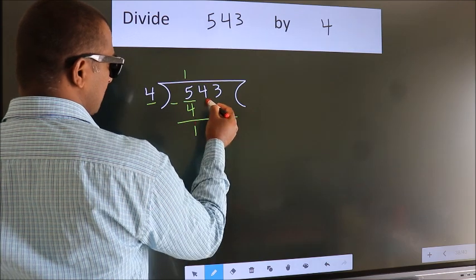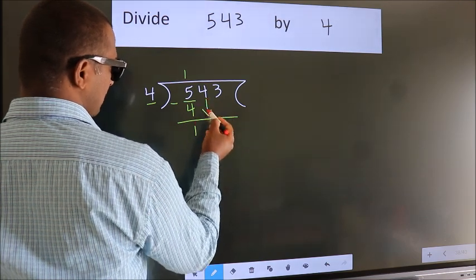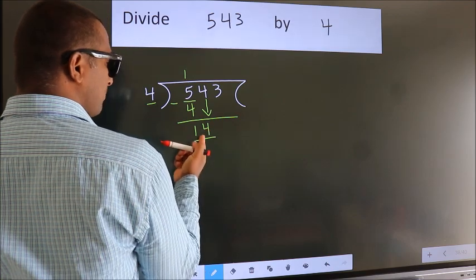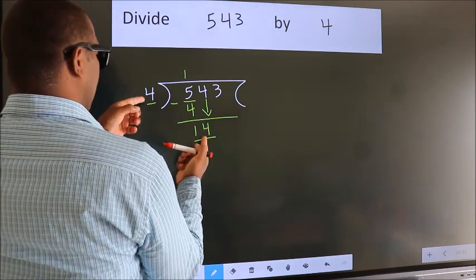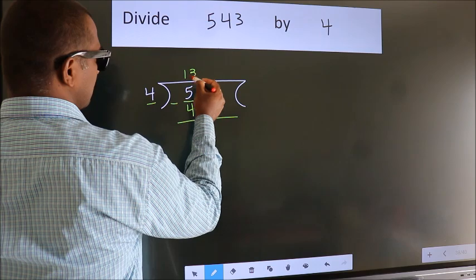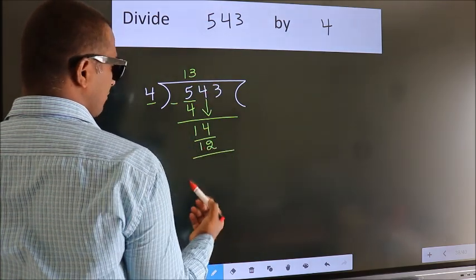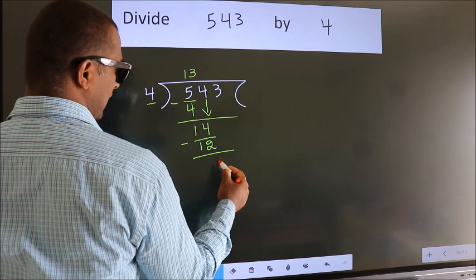After this, bring down the next number. So 4 down, so 14. A number close to 14 in the 4 table is 4 threes, 12. Now we subtract. We get 2.